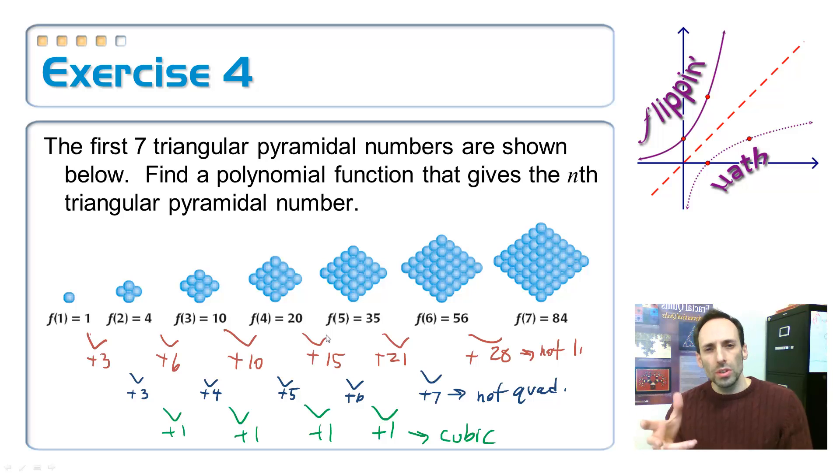How are we supposed to find that cubic function? The way that we're going to do that is we're going to use a matrix. I need inputs and outputs. The first one, the input x value is 1, the output is 1. My x value is 2 for the second one, output is 4. 3 goes with 10, 4 goes with 20, and so on. Let me go to the next slide here so I have a little bit more room to write.